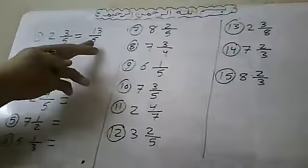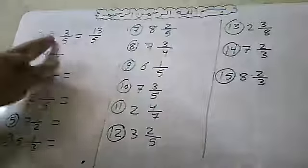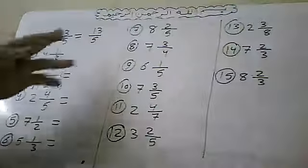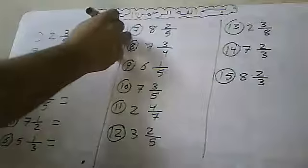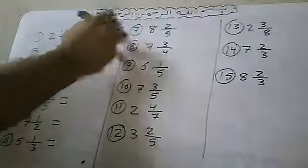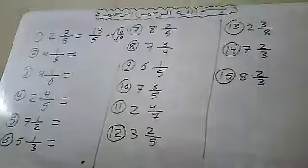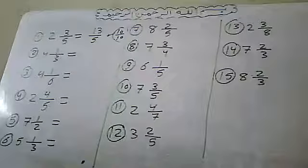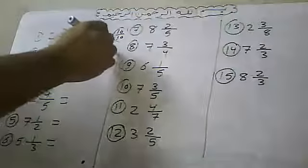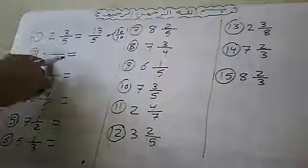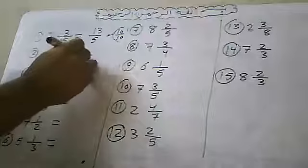In the next session we'll take improper fractions and convert them back to mixed numbers — the reverse process. For this session's problems, if you got it right, mark it correct; if wrong, mark it wrong. We'll add up your total score at the end. Now let's look at the next problem together.